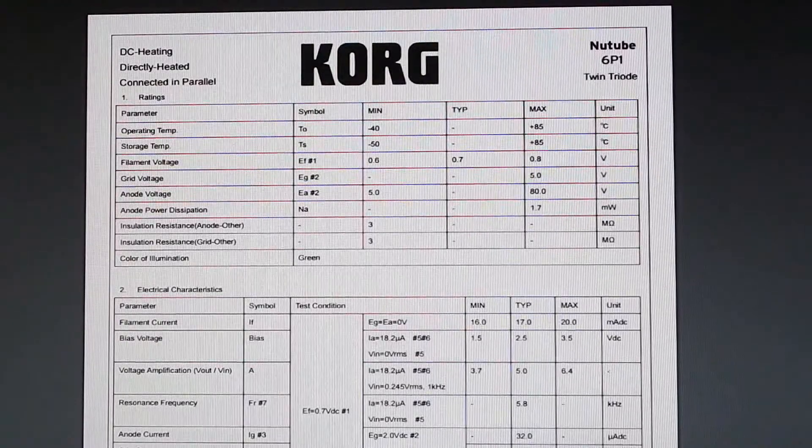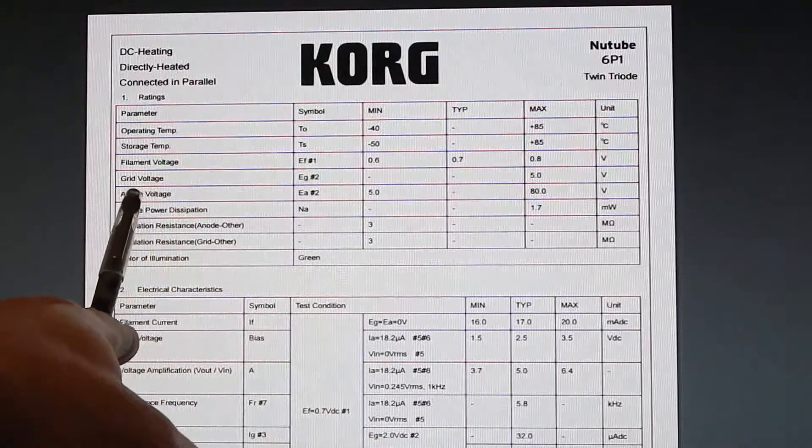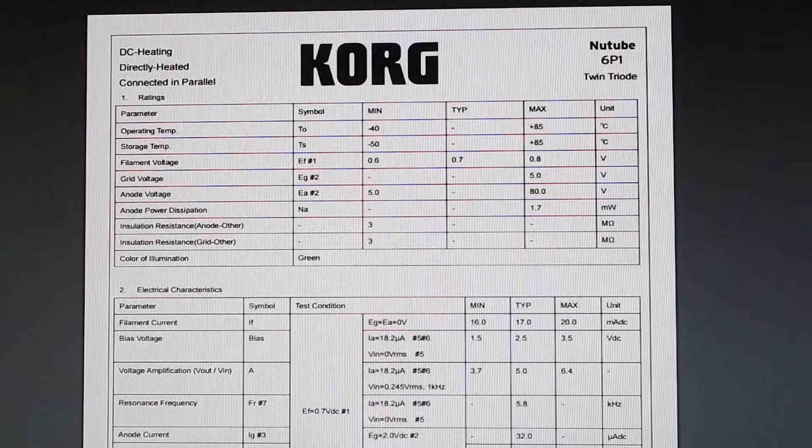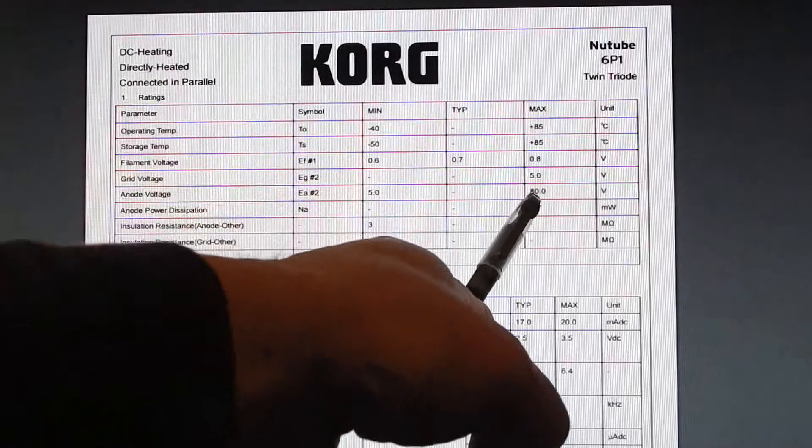It's a very interesting tube because it can work at very low voltages. It can work as low as 5 volts for anode voltage. Practically about 10 volts. It can run quite well at 10 to 12 volts. You can see it can go all the way to 80 as well though.